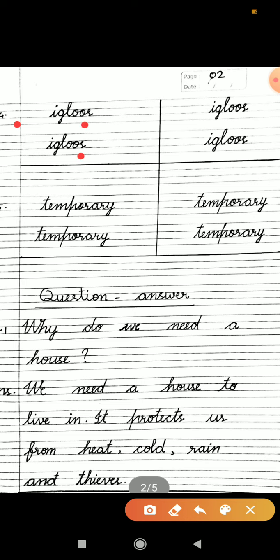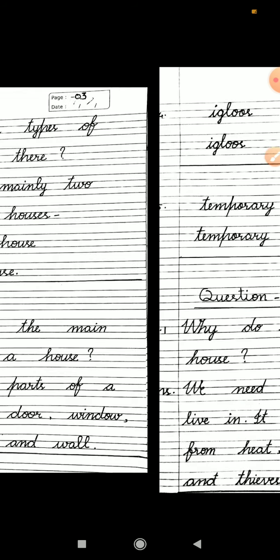Then by leaving one line, you will start to write question-answer. The first question is, why do we need a house? Question mark. We need a house to live in. Full stop. It protects us from heat, cold, rain, and thieves. Full stop.